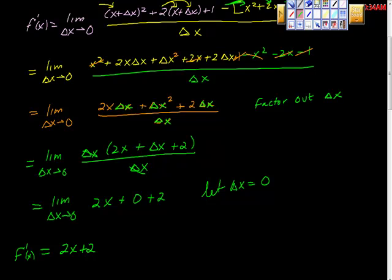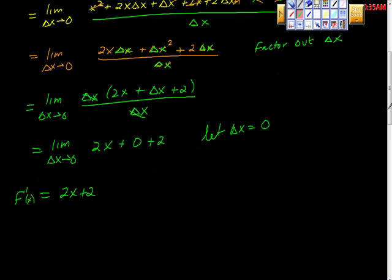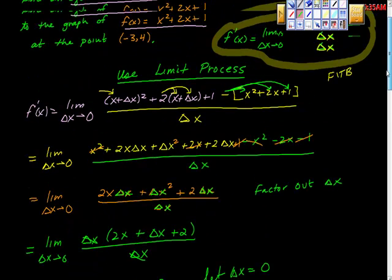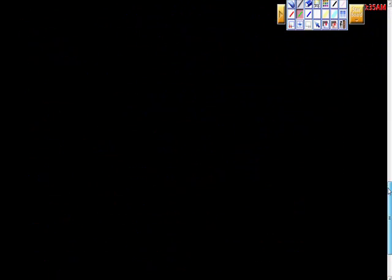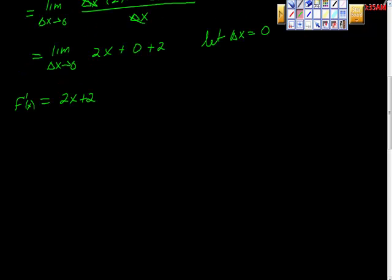Remember, we're interested in the tangent line to this function at the point negative 3, positive 4. So we want to know what's the slope at x is negative 3. We're going to take f prime at negative 3, which is equal to 2 times negative 3 plus 2, which is negative 6 plus 2, which is 4. So that's our slope.